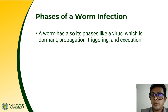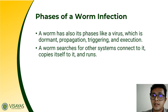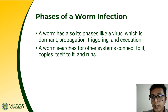A worm also has its phases, much like viruses. It has dormant, propagation, triggering, and execution phases. The worm is just dormant, doing nothing. Then it starts to propagate, and after propagating, it can trigger the payload and finally execute it. A worm searches for other systems to connect to, copies itself, and runs — it can crawl over the network. A virus cannot run in a network, but a worm can travel over a network because it is self-replicating. A worm may also disguise itself as a system process, and as a system process, it is allowed to do anything in your computer.